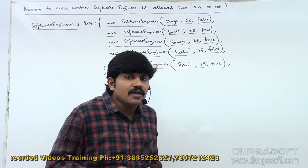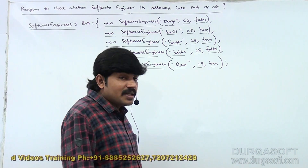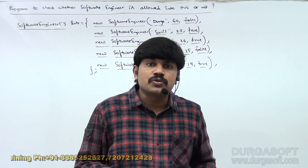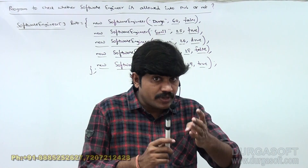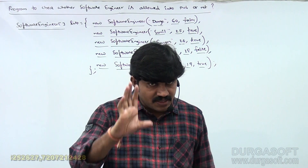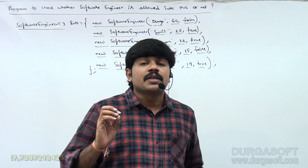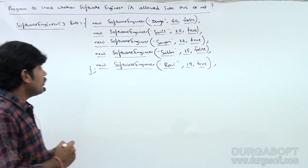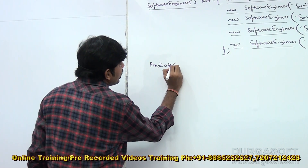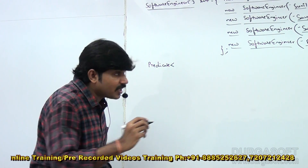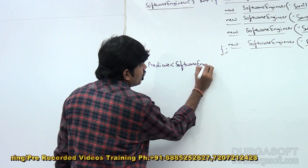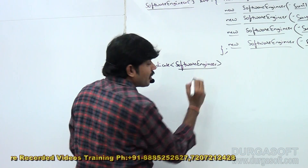Now I want to check which software engineers are allowed into the pub. To check that I want to write a Predicate. The predicate will take a software engineer object as the argument. The condition to check: age greater than or equal to 18 AND isHavingGirlfriend should be true.